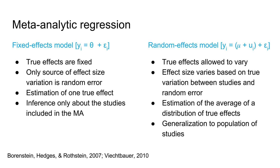Fixed effects models only estimate one true effect. In contrast, random effects models allow true effects to vary. Effect size varies based not only on random errors but also on true variation between studies. Here our meta-analysis does not estimate one true effect but the average of a distribution of true effects. We most commonly use random effects models in meta-analysis, as they more easily allow for generalization to a population of studies for which we often cannot assume there is no variation between true effects.